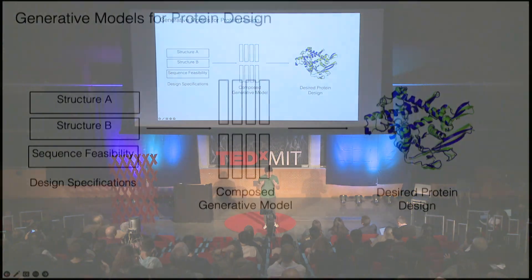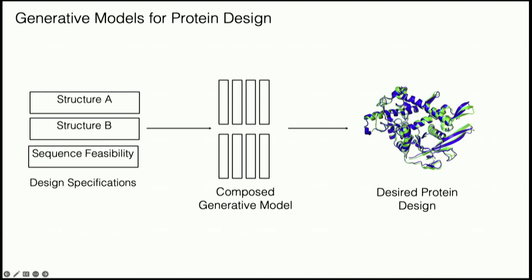Another setting is protein design. In protein design, you often want to design a protein with a particular shape so that it can bind to a receptor in a cell, while also having a particular sequence makeup so that it can fold more feasibly, along with other specifications. You can compose different models: one model specifies how reasonable a sequence is, and other models specify each aspect of structure you want. By combining these models together, you could potentially design completely new proteins. This is very useful because protein design is a very hard process requiring large amounts of engineering and many millions of dollars, but using such systems could save a lot of that cost.